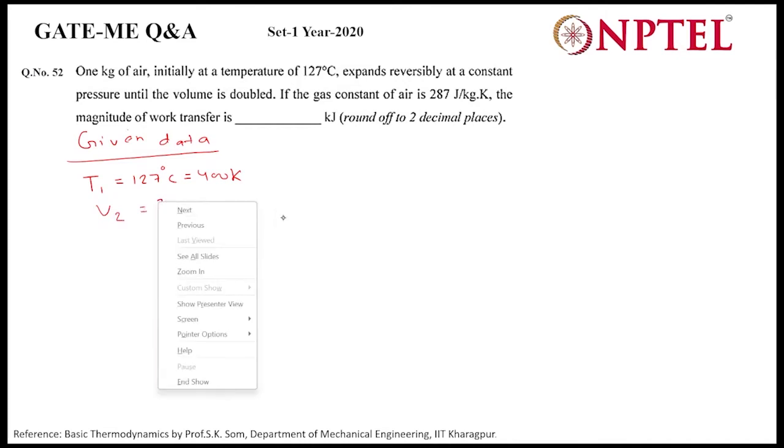And gas constant R is given as 287 joule per kg kelvin. Now the process is the constant pressure process.